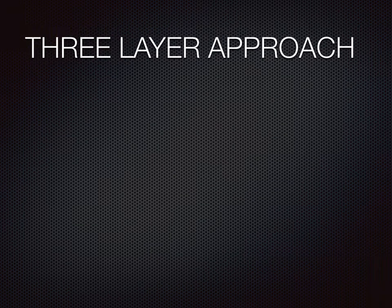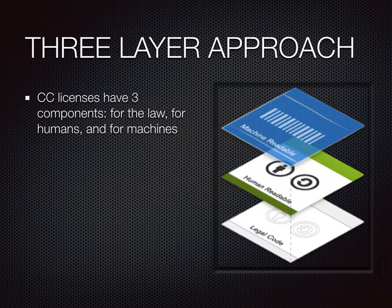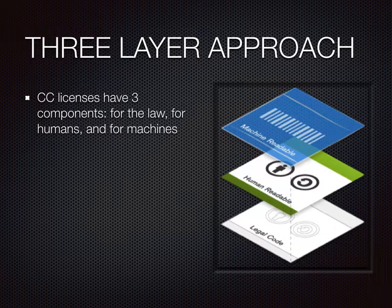Each of these six licenses is built with three structural components or layers. First, each license is written with legal language in order to function in a dispute or a court case. Second, the legal layer is also described in more simple, human-readable terms, including symbols and descriptions. Third, the licenses each have a machine-readable component so that computer systems can determine the license, such as when an advanced Google search sorts results for available public domain or Creative Commons licenses.